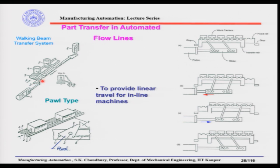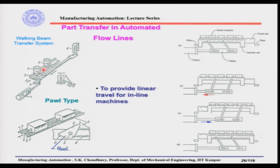Here we have the cylinder and piston system — one for horizontal plane movement and one for the vertical plane. Both are connected with the same shaft, and on that shaft are two rigidly fixed arms. When the horizontal cylinder activates, these arms move the parts towards the right side. Then this cylinder stops and the vertical cylinder acts, releasing the parts, transferring them from one place to another.